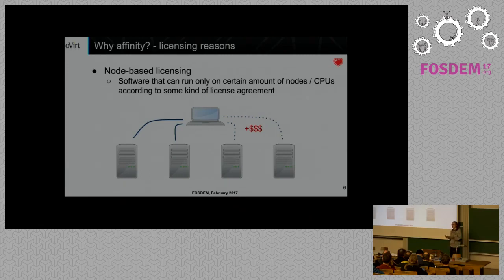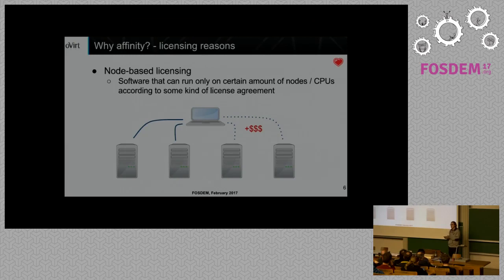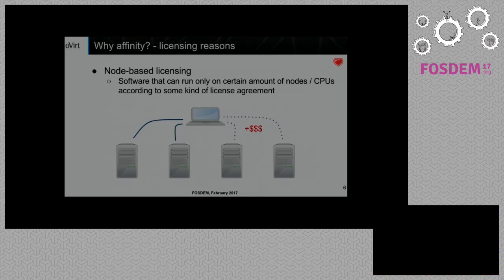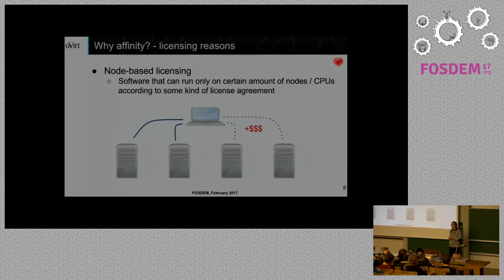Let's assume you have some software whose licensing model is quite benevolent — it only limits the number of physical machines you're allowed to run the software on. When you run virtual machines on top of those physical machines, you can run multiple copies on each physical machine, but you still have to maintain that all virtual machines are not violating the actual number of physical machines you're allowed to use. So you set affinity — in this case, a hard positive affinity — to constrain those VMs to the permitted machines. That was one of the original bugs and reasons we created affinity in the first place.